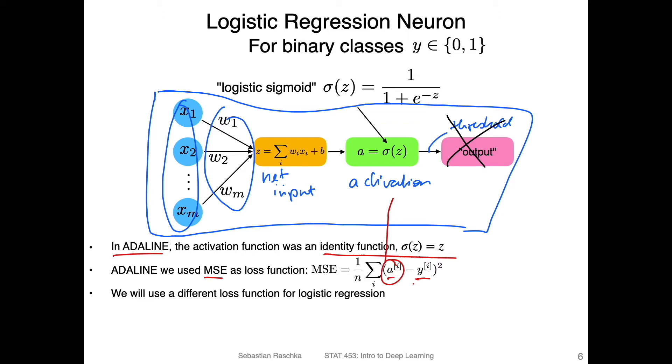Now, the only difference really between ADALINE and logistic regression is that we have a different activation function. One difference is that we now use this logistic sigmoid function instead of the identity function. So in ADALINE we had just the identity function z, input z output z. Now we have this nonlinear activation function. Another difference is that we now have a different loss function. I will cover the loss function in logistic regression in the next video.